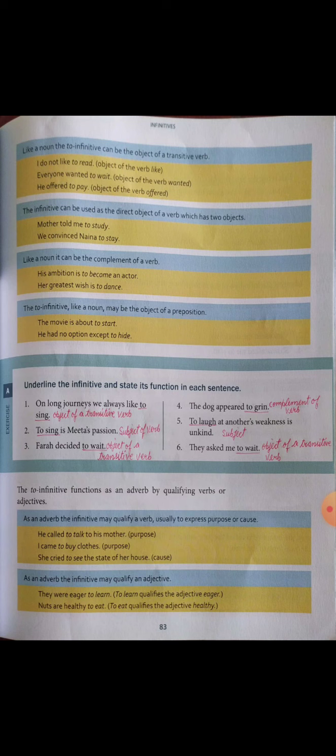Like a noun, the 'to' infinitive can be the complement of a verb. For example: 'His ambition is to become an actor' and 'Her greatest wish is to rise.' Also, like a noun, the 'to' infinitive may be the object of a preposition.